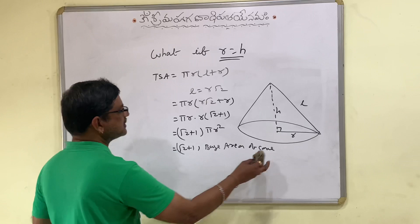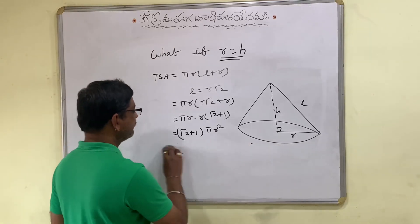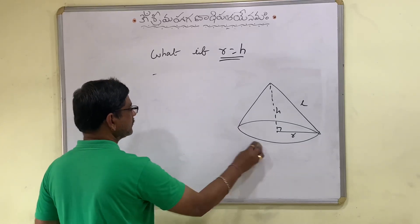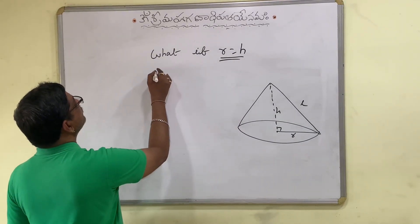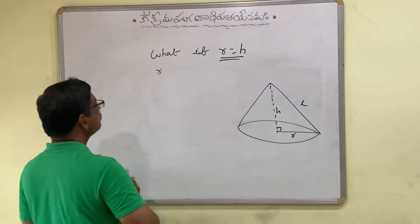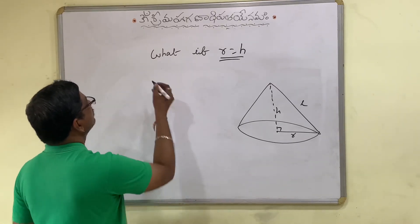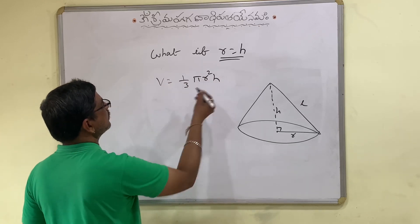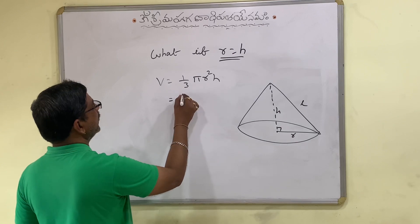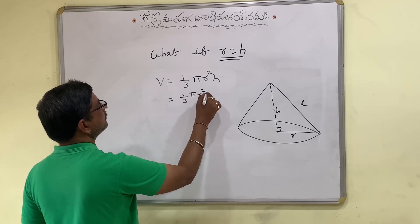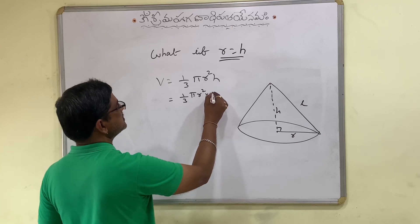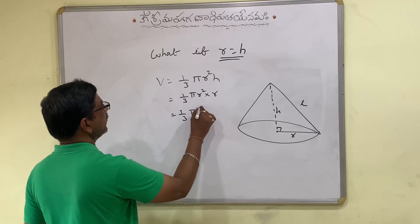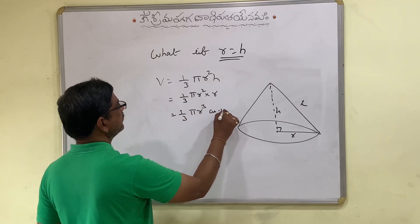Now what happens to volume of cone if R is equal to H? Volume of cone is one third πR square H. Inserting R in place of H, it becomes one third πR cube cubic units.